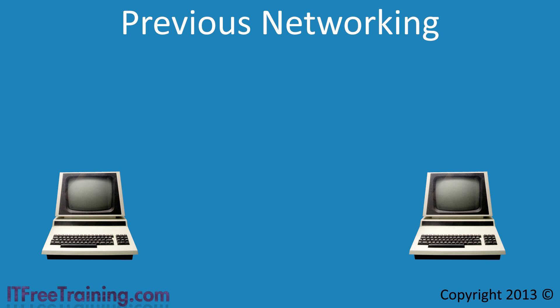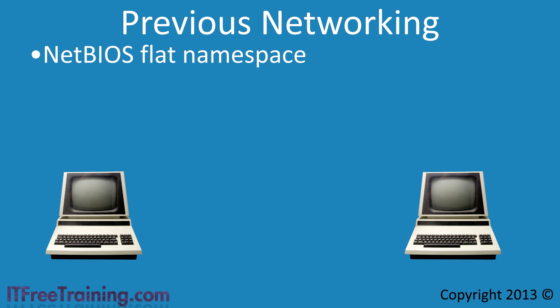When computers were first networked and started sharing files with each other, the networks were quite small in comparison to today. It was not common practice for computers to be connected to the internet, and if they were, they would not generally be sharing files using the internet. At the time, to make networking simple, file sharing was performed using a flat namespace. Microsoft Windows used NetBIOS to provide the file sharing. NetBIOS, when it was developed, was not routable, so it could only be used to share files with computers that were directly connected to each other.